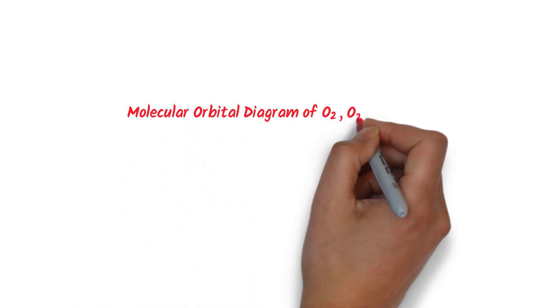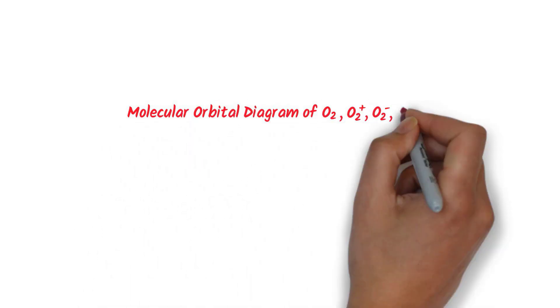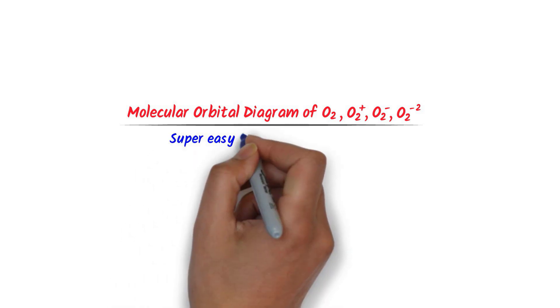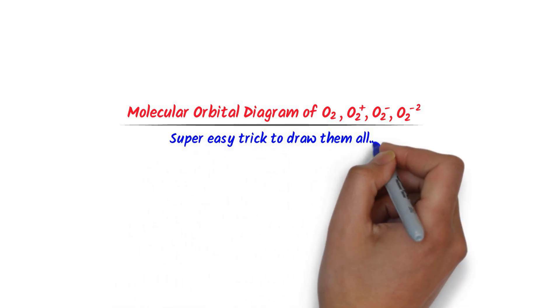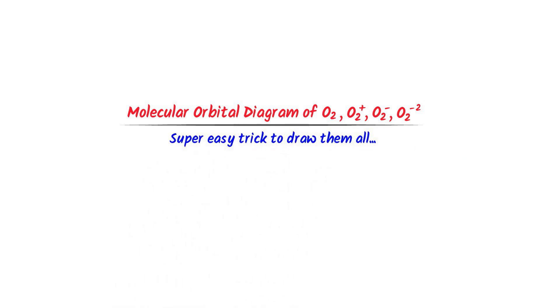Molecular orbital diagram of O2, O2 negative ion, and O2 positive ion. I will teach you a super easy trick to draw the molecular orbital diagram of these species.